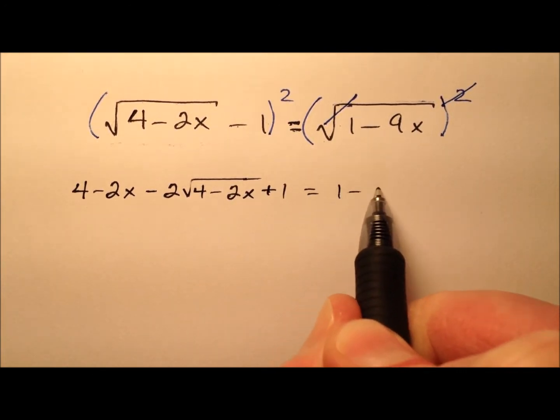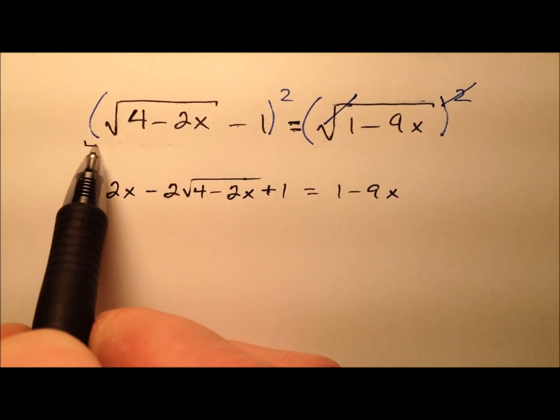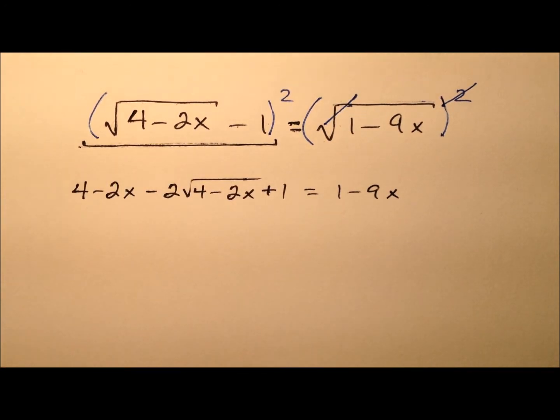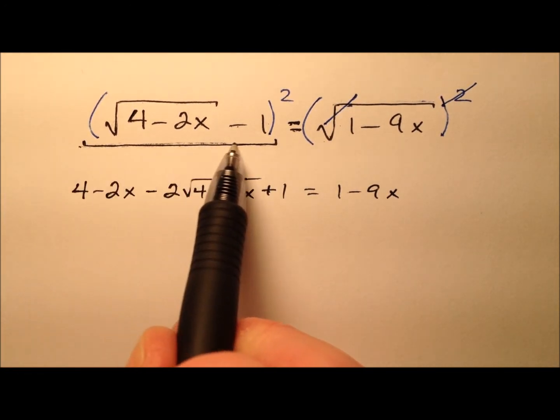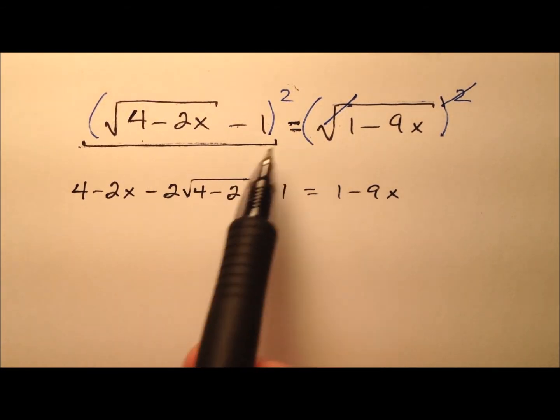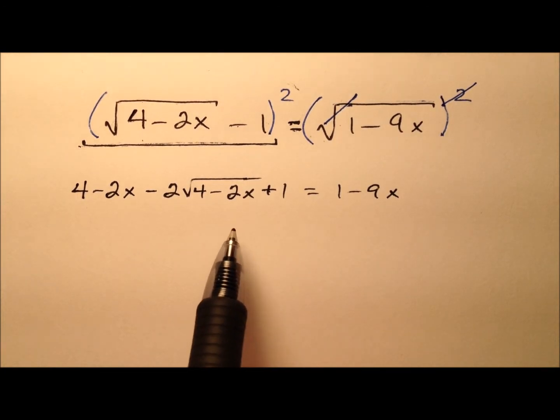That will equal now the 1 minus 9x. This multiplication right here is the single most common place that students make mistakes. Be very careful as you square this expression. If you have to put them side by side and not use a formula, that's perfectly fine as well.